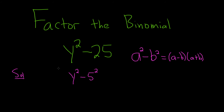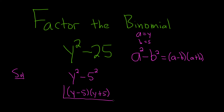So our a is going to be y — a is y. And our b is equal to 5. And so it'll just be y minus 5, and then y plus 5. You just take this one and subtract it from this one, then take this one and add it to this one. It doesn't matter if you do the plus first, as long as one of them is plus and one of them is minus.